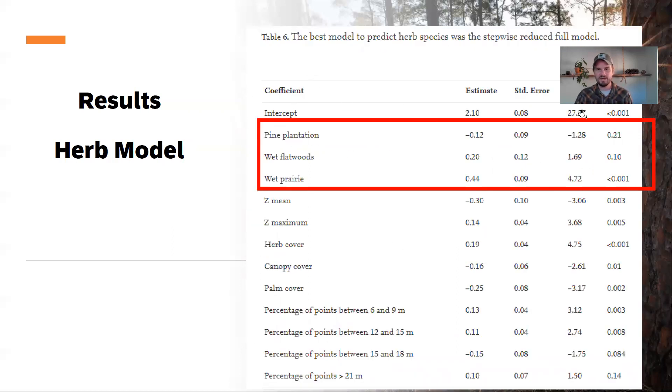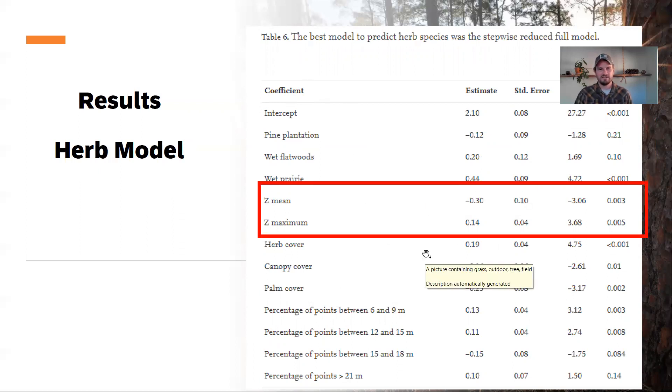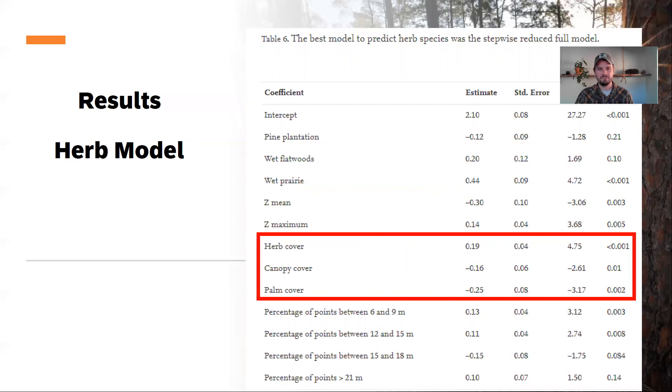Again, we have the natural community type being really important, as well as some LiDAR metrics, Z mean and Z max. So really positive effect on overall richness from taller forests and a negative effect on our herb richness if you had a really low canopy. So if the mean of Z was really low, that would be a negative effect on the total herb richness. So they like the tall canopies in this case. And you can see some of the traditional metrics here, herb cover, canopy cover and palm cover. Herb cover being really positively related to herb species and canopy cover being negatively related to total herb species. So a tall, thin canopy in this case was the best with palm cover really reducing richness also.